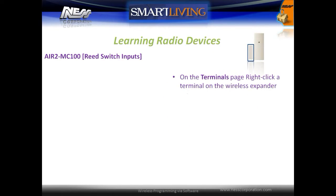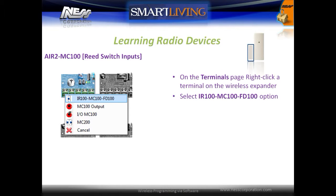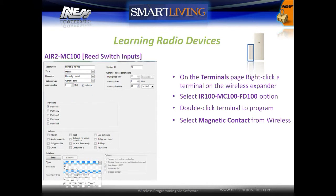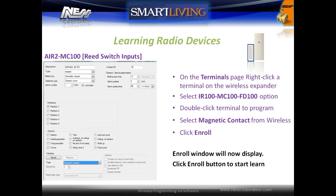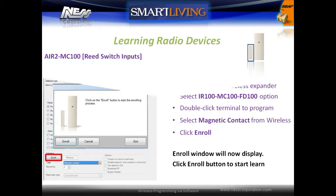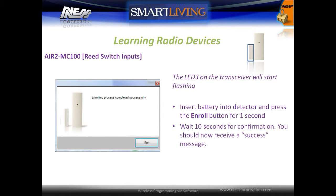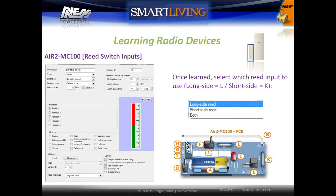To learn as a reed switch, on the terminals page right click on a terminal on the wireless expander, select the IR100 option, and double click to open the programming window. Under the wireless programming section, select the type as magnetic contact. Click the enroll button to enroll the device. Once the system is in enroll mode, the transceiver's LED 3 will start to flash — press the enroll button on the device. After about 10 seconds, a message should confirm that the device was enrolled successfully. Once learned, select which reed input will be used.